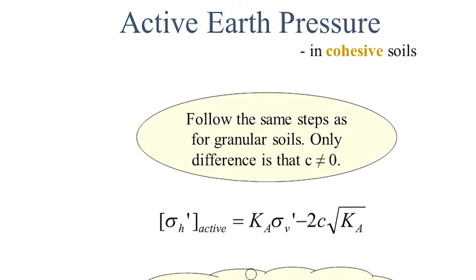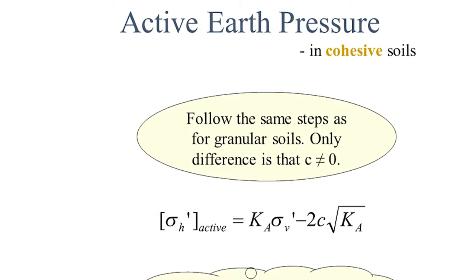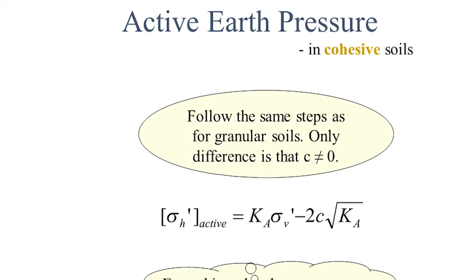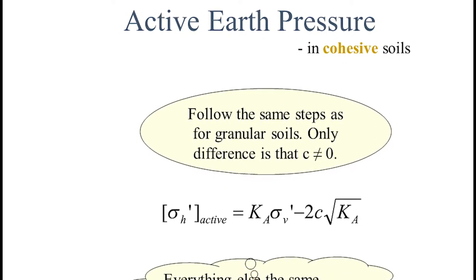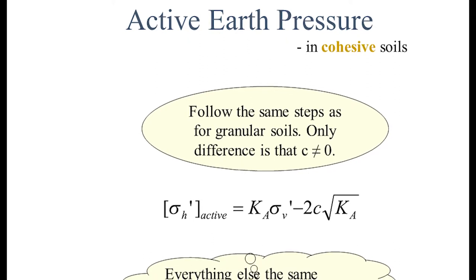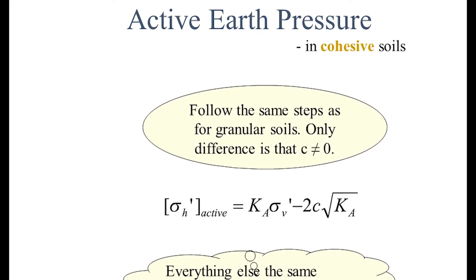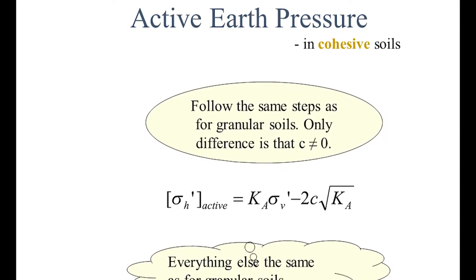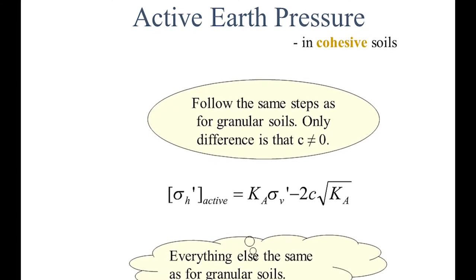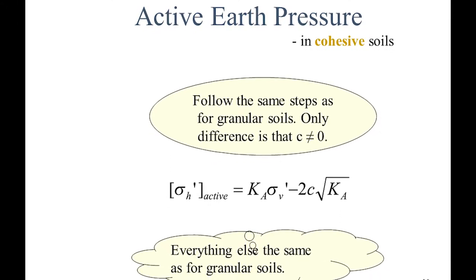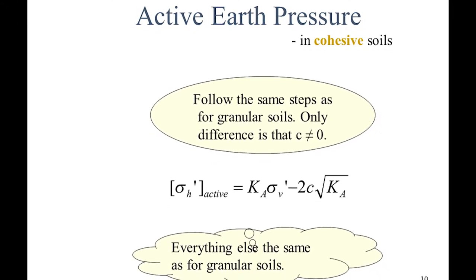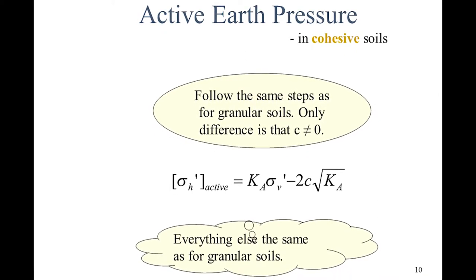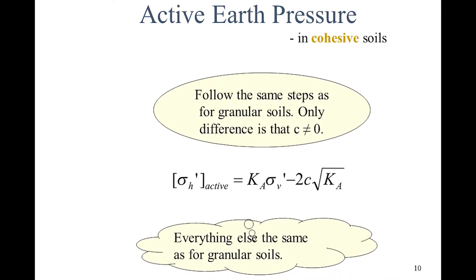For active earth pressure in cohesive soils, sigma H dash (active) equals Ka times sigma V dash minus 2c times root of Ka. Where C is zero, this satisfies and reduces to the granular soils equation.